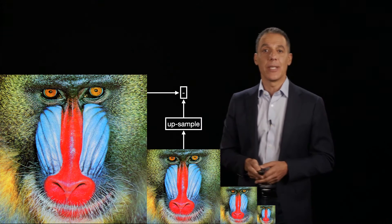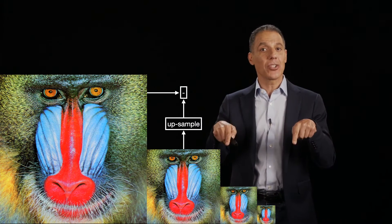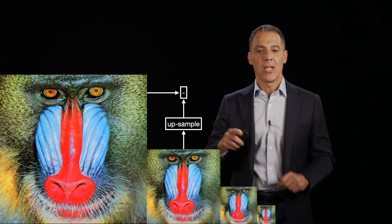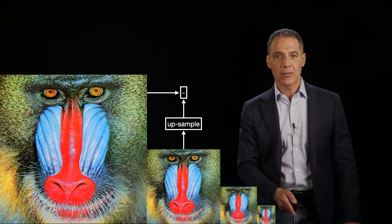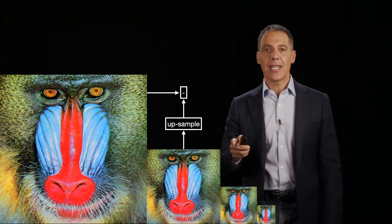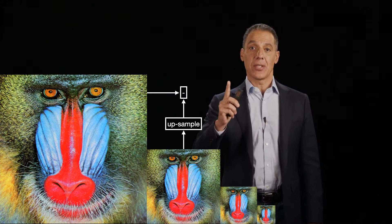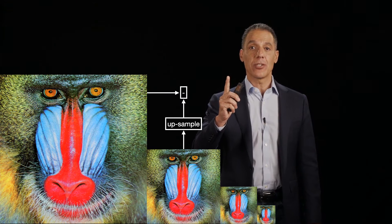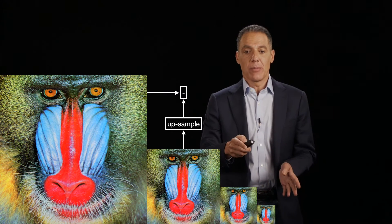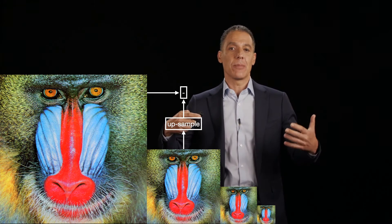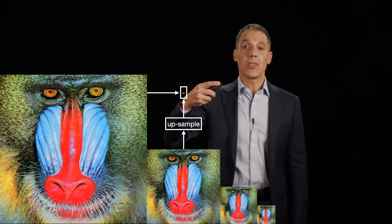The Laplacian pyramid is generated in a slightly different way, but starts with the Gaussian pyramid. So we're going to build the Gaussian pyramid, and then we're going to take this level, upsample it back to the original resolution — no blurring, obviously, because it's already been blurred — so just interpolate the missing pixels and then difference it from the original.